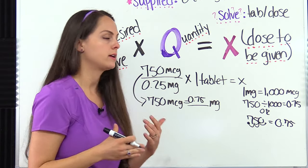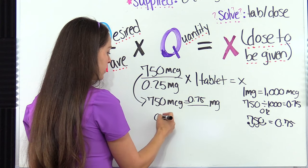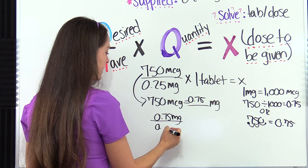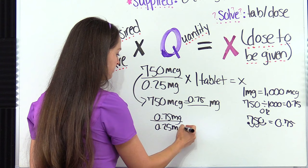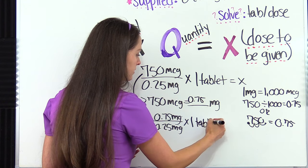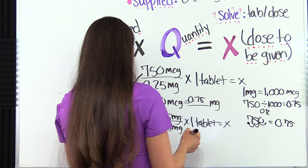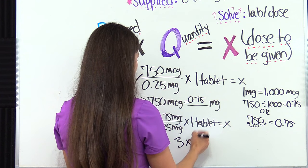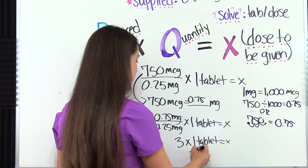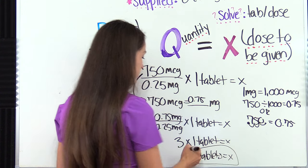Now we're ready to go back to the formula and solve. 750 micrograms is 0.75 milligrams — that's our desired dose. What we have on hand is 0.25 milligrams. Milligrams cancels out. We multiply by the quantity, one tablet, equals X. 0.75 divided by 0.25 gives us three, times one tablet equals X. Three times one is three. So the patient needs three tablets to equal the dose ordered by the physician.